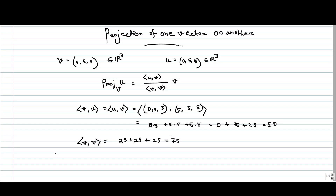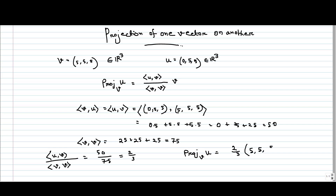The scalar we get is ⟨U,V⟩ / ⟨V,V⟩, which is 50/75 = 2/3. Now the projection of U in the direction of V is 2/3 multiplied by V. Since V is (5,5,5), the projection is (10/3, 10/3, 10/3).